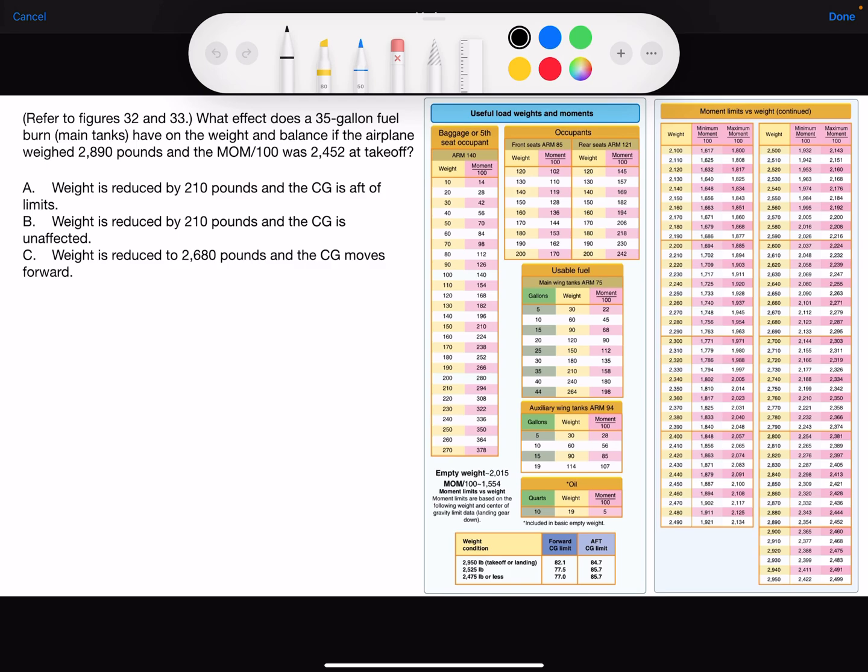I'm first going to create a table to organize this information. Before fuel burn, weight was 2,890 pounds. Arm and moment. Moment in hundreds was 2,452.